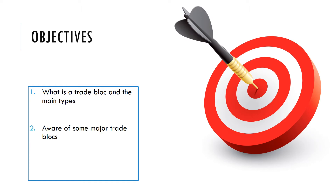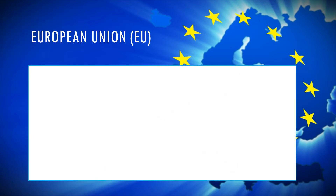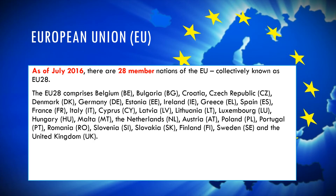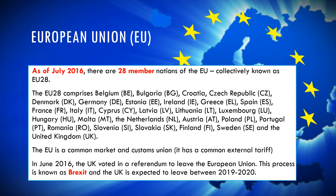The European Union is the most commonly cited example. There are 28 member nations, collectively known as the EU28. The EU is both a common market and a customs union — it has free movement of the factors of production between member countries and applies a common external tariff for imports from non-members. In June 2016, the UK voted in a referendum to leave the EU, which was expected to occur between 2019 and 2020.